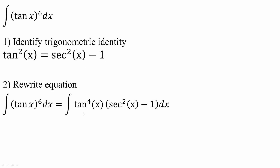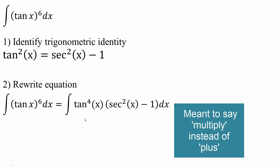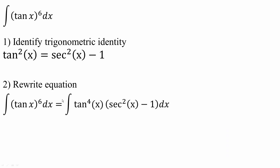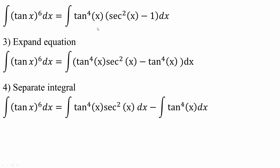We can say the integral of tan raised to the fourth x times this piece, because this piece is equivalent to tan squared x. So tan squared x plus tan raised to the fourth x is equal to tan x raised to the sixth. Next I will expand this: tan raised to the fourth x times secant squared x, minus tan raised to the fourth x times negative 1, giving us negative tan raised to the fourth x dx.